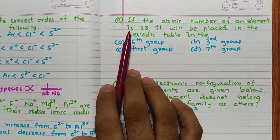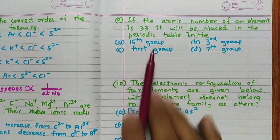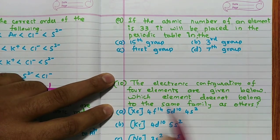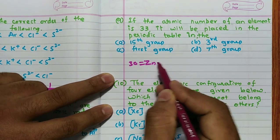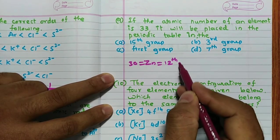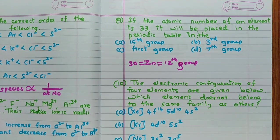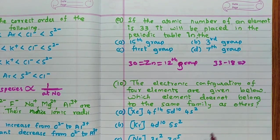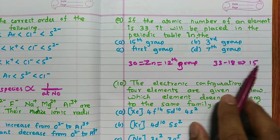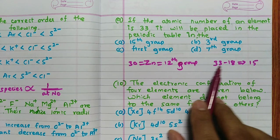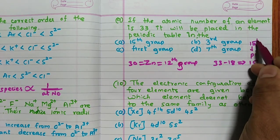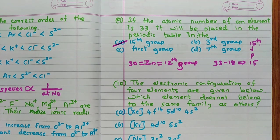Question nine: if the atomic number of an element is 33, where will it be placed in the periodic table? Remember that atomic number 30 is zinc, which is in the 12th group. You can also calculate: 33 minus 18 equals 15. Since 15 plus 18 equals 33, and 15 corresponds to phosphorus which belongs to the 15th group, the element with atomic number 33 also belongs to the 15th group. This is an easy way to identify the group.